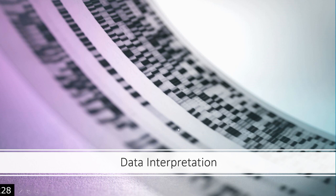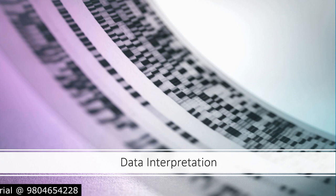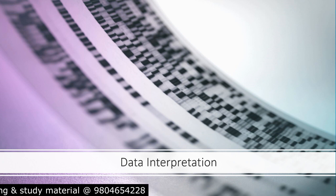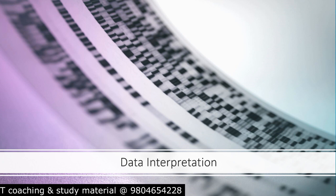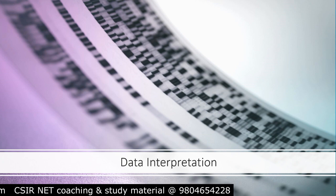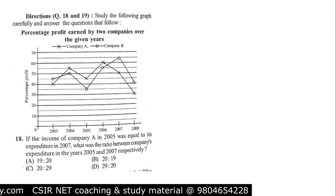Now it's time to discuss data interpretation. Data interpretation is a very important section of Paper One for CSIR UGC NET, IIT JAM, and BAIT as well, because data interpretation is needed as a research scientist. If you're going to be a budding scientist, you will deal with it every single day. They'll give you a representation of data in graphical or compact formats, and from there you need to gather information and find the answer.